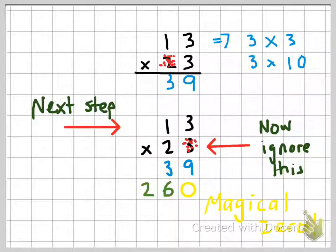Now the next step, I want you to ignore the number three because we've just used it and the first thing you want to do is add in a magical zero. Now make sure you do that first, put your magical zero in so that goes in under the nine. Now we just multiply again, so we start with the number two and we go two times three is six, and then I go two times one is two, and it's really important you keep your columns.